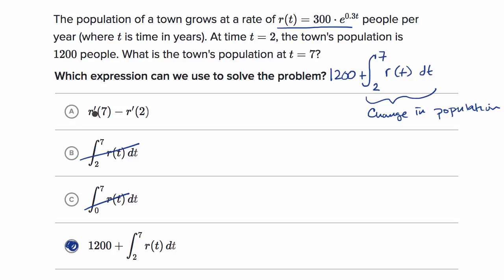The remaining choice takes the derivative of the rate function, which gives the rate of change of the rate at time seven minus the rate of change of the rate at time two — so rule that one out as well. Let's do one more of these.